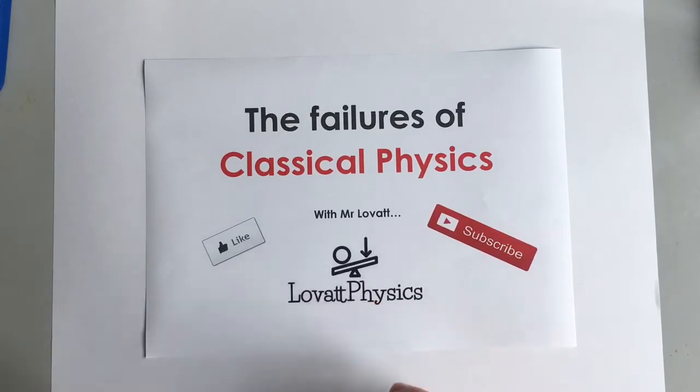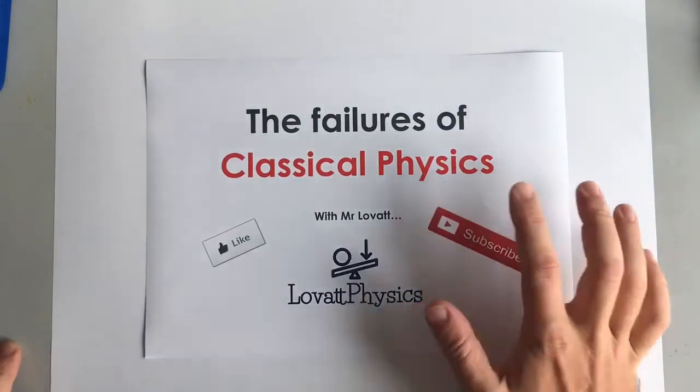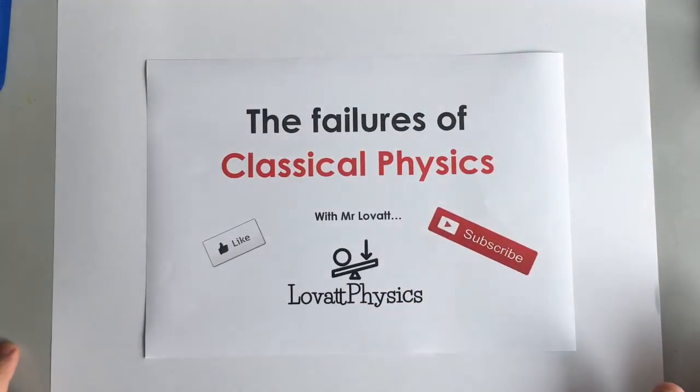This is a Love at Physics video investigating where classical physics failed and why we need quantum and modern physics. Now the first failure of classical physics that we will look at is blackbody curves.